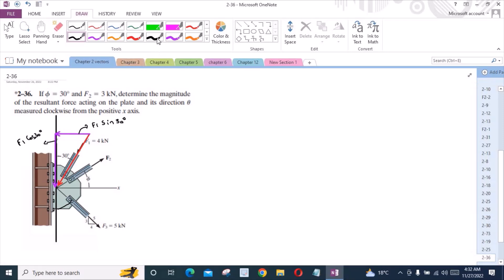For the force F2, I have also two components: one vertical component and one horizontal component. This right here is F2 sin phi and this is F2 cos phi.